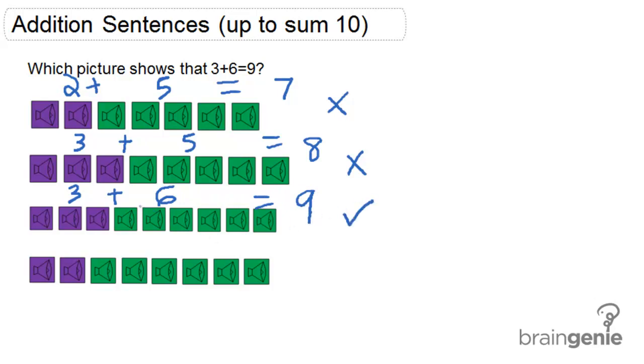Let's just look at the last answer and make sure that it's not correct. 2 purple speakers plus 1, 2, 3, 4, 5, 6 green speakers equals 8. Which is also not correct.